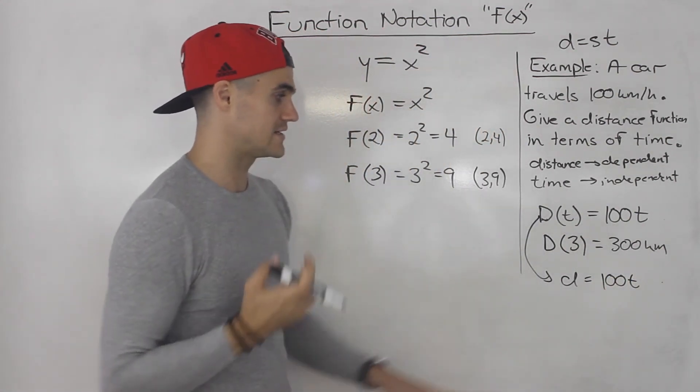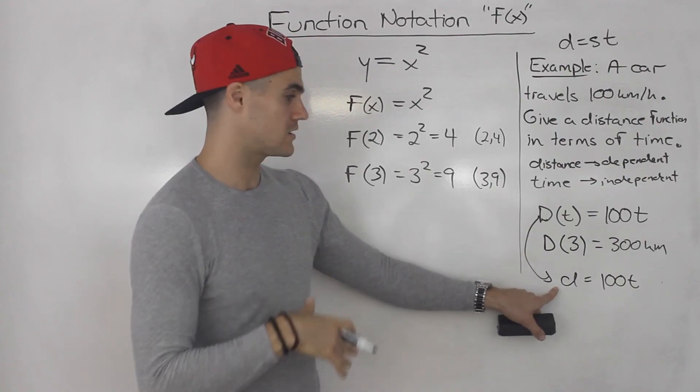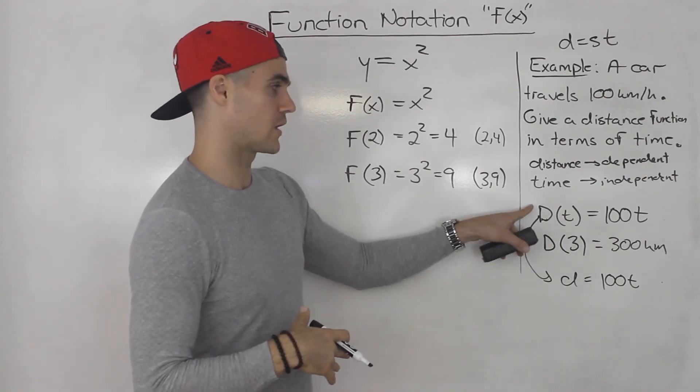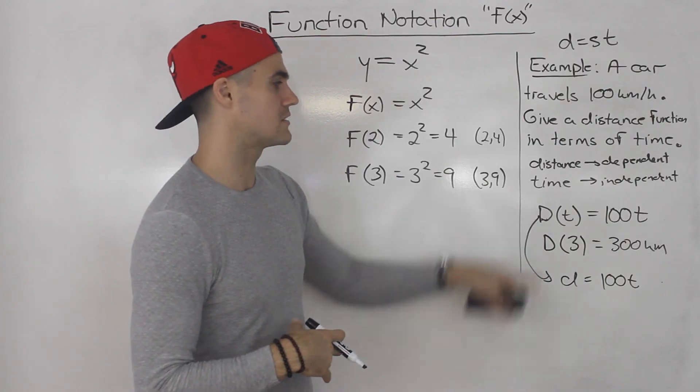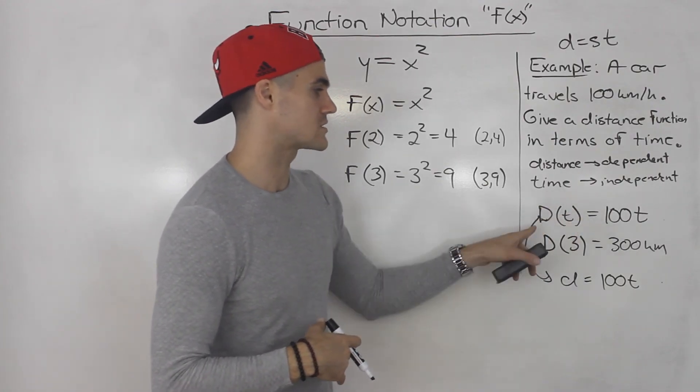Right? So another way to write this is just distance is equal to 100t. Right? So maybe in grade 10, the previous grade, you would have seen it like this. Now, in grade 11, you're probably going to see stuff like this. But they both mean the same thing. Don't get confused about this notation.